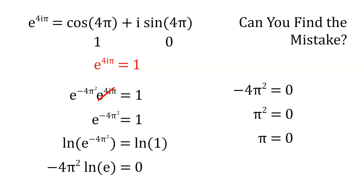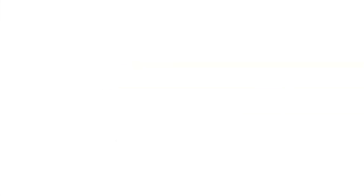Now clearly, this is an absurd proof. Where did the problem come from? Pause the video to find out. So the problem occurred between these two steps. Specifically, when squaring e to the power of i pi, we need to use the correct definition for complex exponentiation to avoid contradictions like pi equals zero.